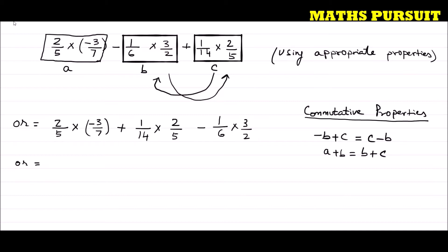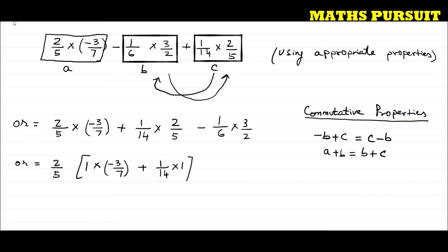Now, you could see here we have 2/5 and here we have 2/5. We can consider 2/5 as common and move it outside. Wherever 2/5 appears, I replace it with 1, so we are left with: 2/5 × (1 × (-3/7) + 1/14 × 1), minus 1/6 × 3/2.